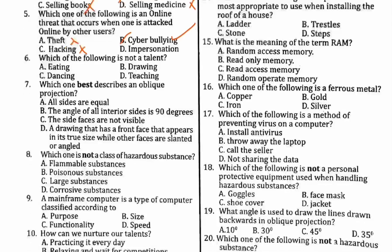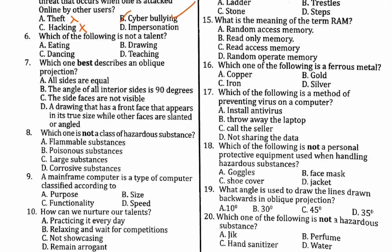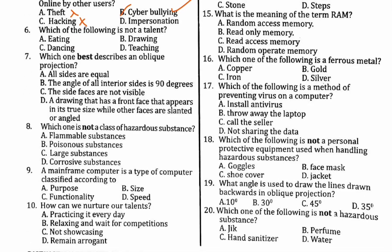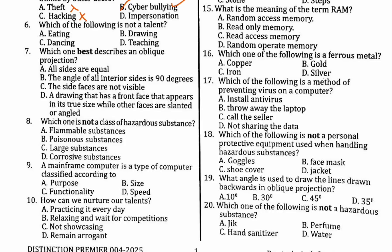Number six: each of the following is not a talent. Drawing is a talent. Teaching is a talent. Dancing is a talent. But eating is not a talent. Therefore, the correct answer for number six is A.